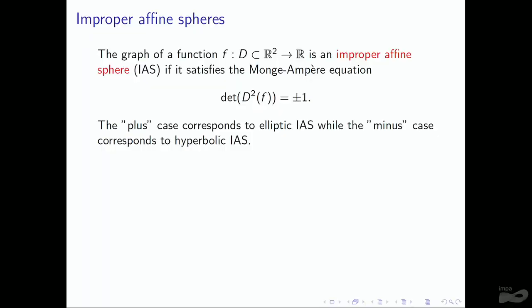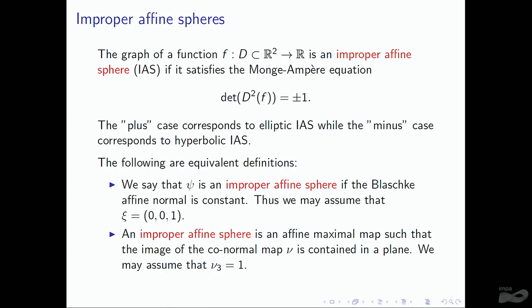Improper affine spheres are a subclass of affine-maximal maps. If you consider a graph of a function, it is an improper affine sphere if it satisfies the Monge-Ampère partial differential equation — the plus case is an elliptic improper affine sphere, and the minus case is a hyperbolic improper affine sphere. Equivalent definitions: the Blaschke normal is constant, which we may assume equals (0,0,1), and in terms of the conormal, the image of the conormal is contained in a plane — assuming the third coordinate is one.